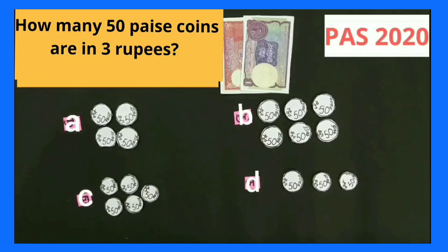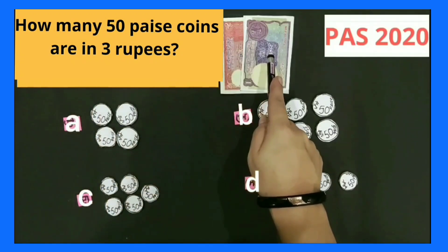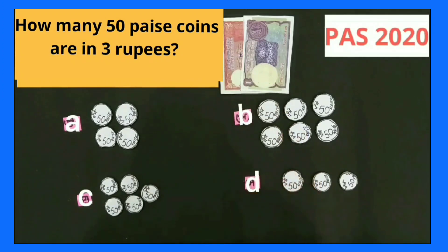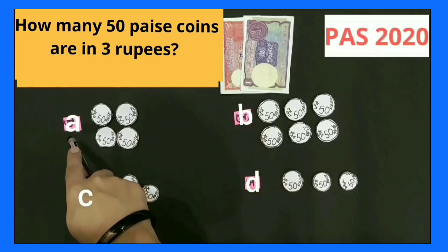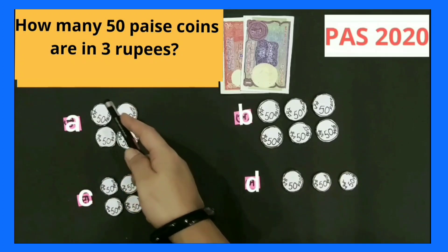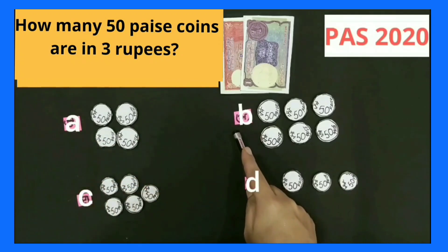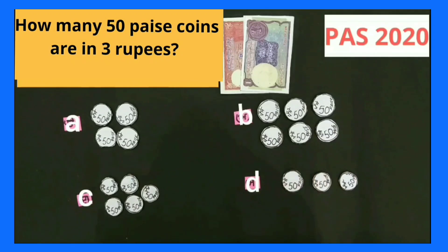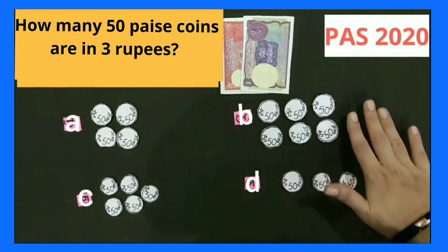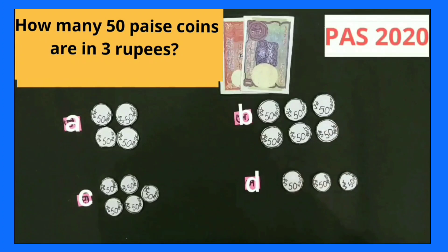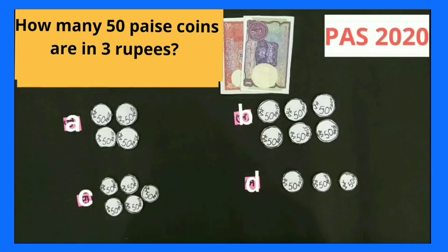Now we will discuss one question. How many 50 paise coins are in 3 rupees? Four options are given and we have to choose the correct one. Option A has 4 coins of 50 paise, which equals 2 rupees — so it is wrong. Option B has 6 coins of 50 paise: 4 coins equal 2 rupees, and 2 more 50 paise coins equal 1 more rupee, so 2 plus 1 equals 3. Option B is the correct answer — tick option B.